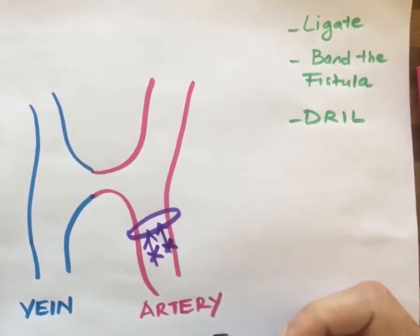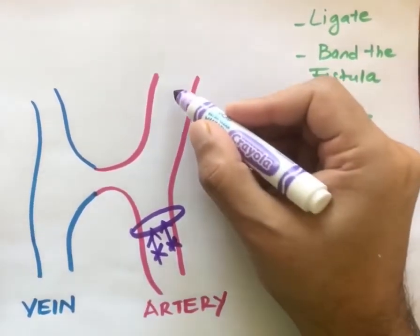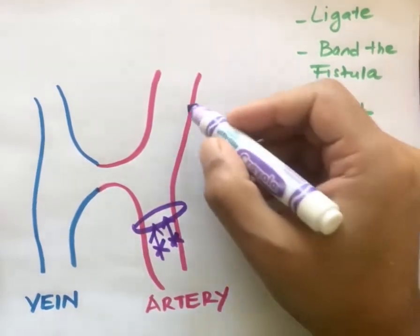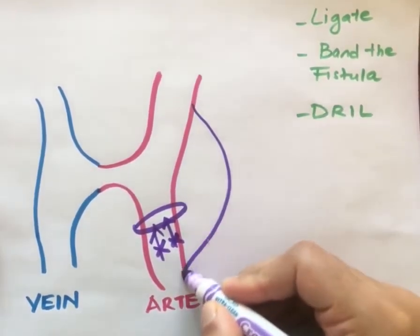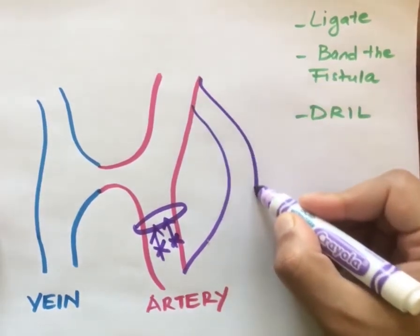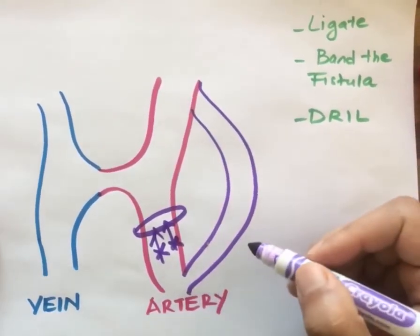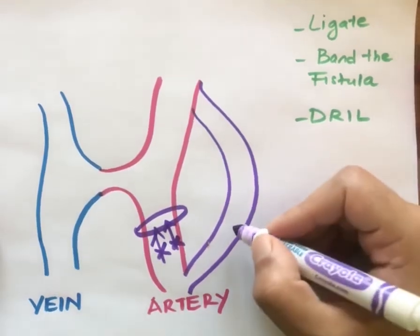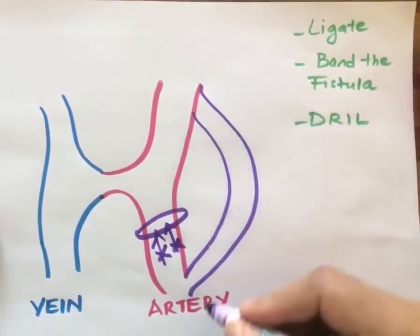The other thing you now do is ensure blood can still reach the arm and hand. So there is a bypass graft — the revascularization pathway — using PTFE or any other graft you can use. That would be the distal revascularization.